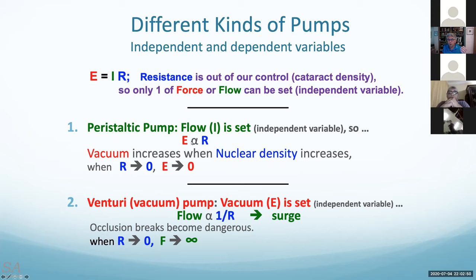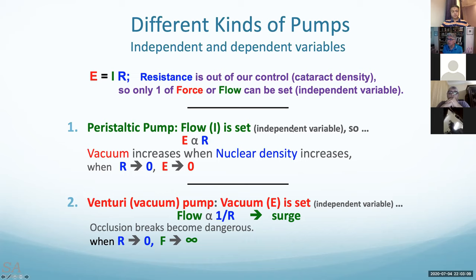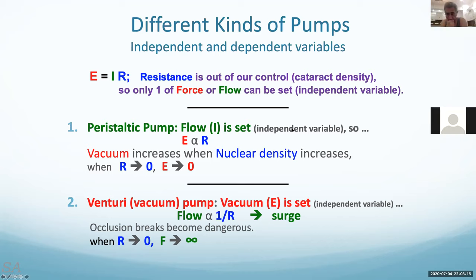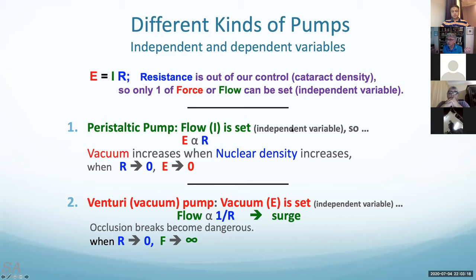The faster the flow rate, once you occlude it by high resistance, the vacuum force will build up very quickly. On Alcon machines, you can set the dynamic rise, which causes the machine to pump fluid through faster if you want the rise to go quicker — but it also increases the risk. When you eat through the piece, the dynamic fall will be very fast, so you're going to get occlusion breaks.